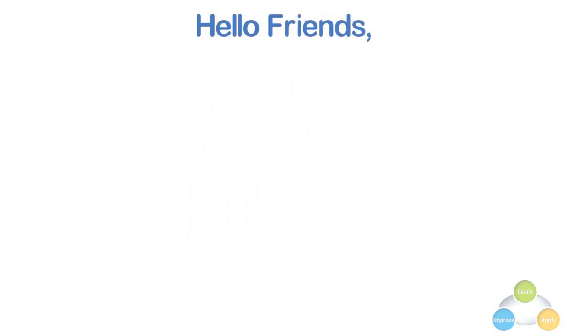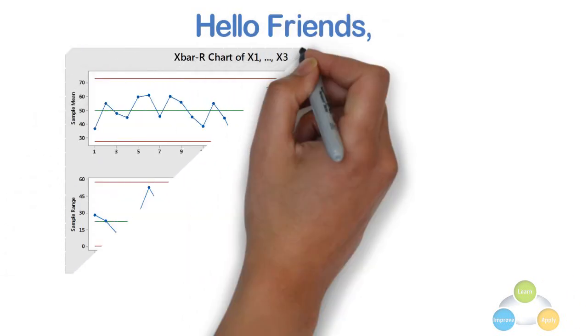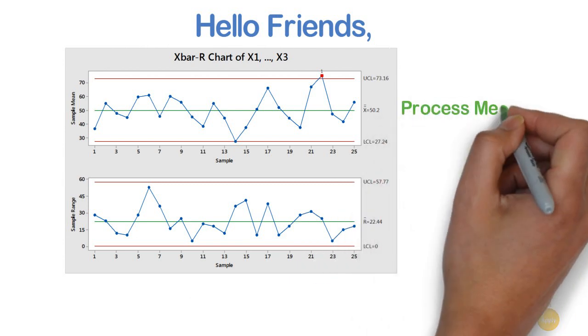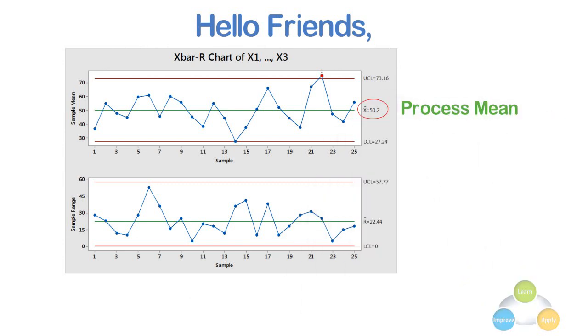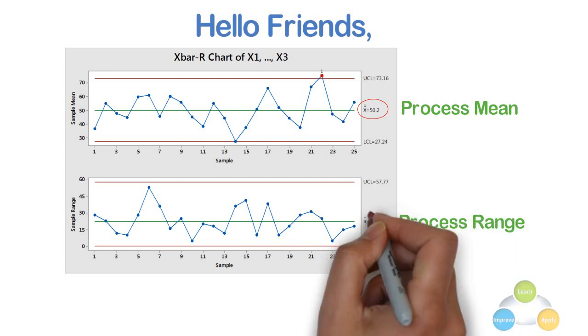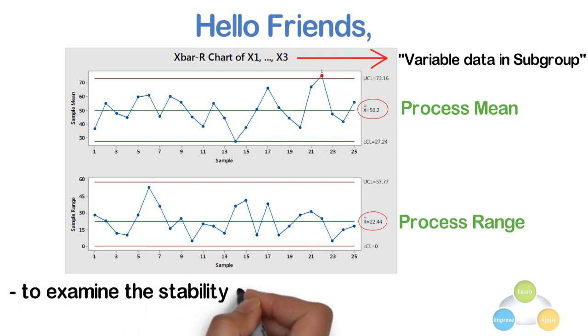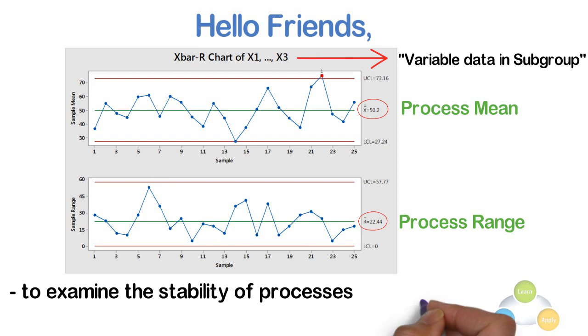Hello friends, in the series of control chart creation, I am going to explain X bar R chart in this video. An X bar R chart plots the process mean (X bar chart) and process range (R chart) over the period of time for variable data in subgroups. This combination control chart is widely used to examine the stability of processes in many industries. So, let's begin the learning of X bar R chart.